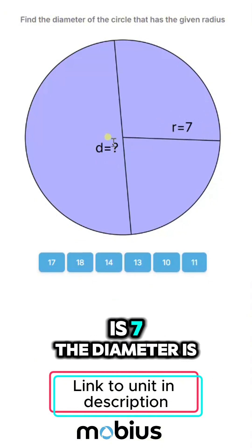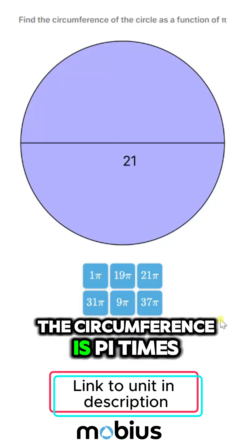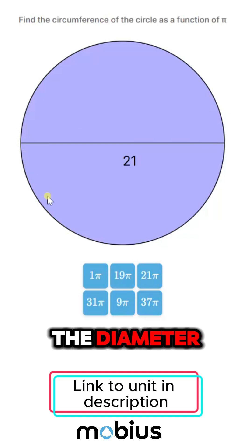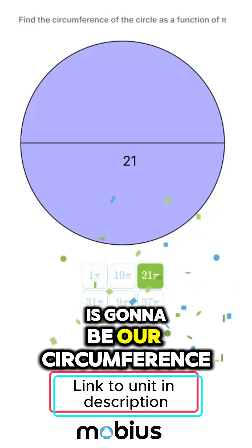So if the radius is 7, the diameter is twice that, or 14. The circumference is pi times the diameter, and our diameter here is 21, so 21 times pi is going to be our circumference.